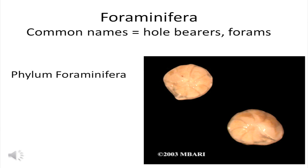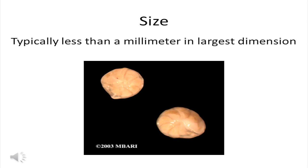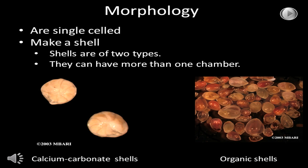Now I'm ready to start talking about deep sea animals, and I want to begin with the meiofauna, the smallest size class. The first group I want to talk about are the foraminifera. Deep sea biologists call them forams, and they have their own phylum. Forams are usually less than a millimeter in their largest dimension. Foraminifera are single-celled and they make a shell in which to live.